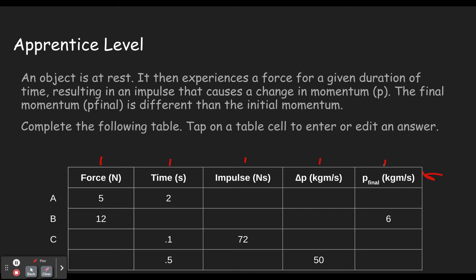So we know that impulse equals force times time. So when we're solving for impulse, we just do force times time. Five times two is ten. The units are all up here. We know that impulse causes a change in momentum. So if the impulse is ten, the change in momentum is ten.